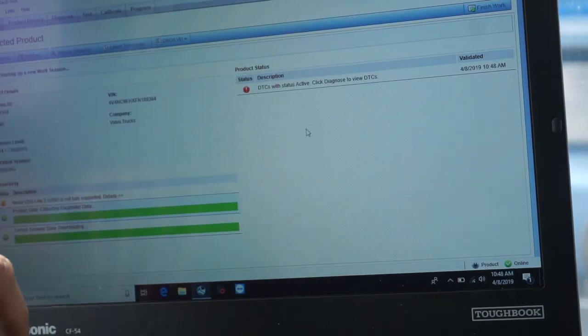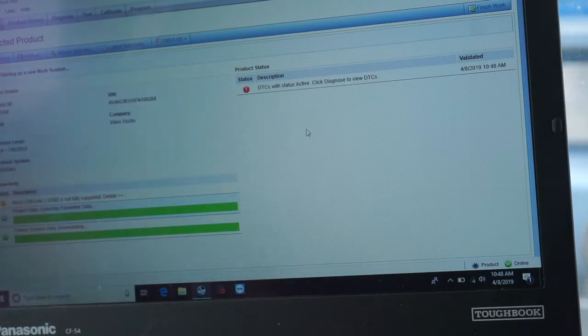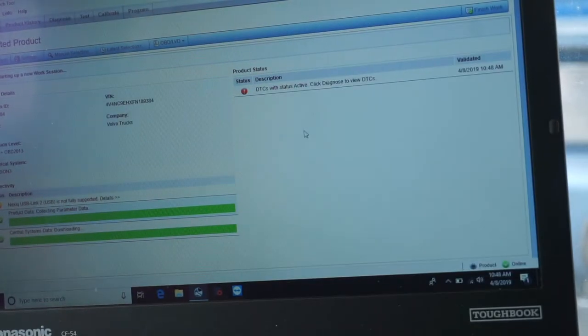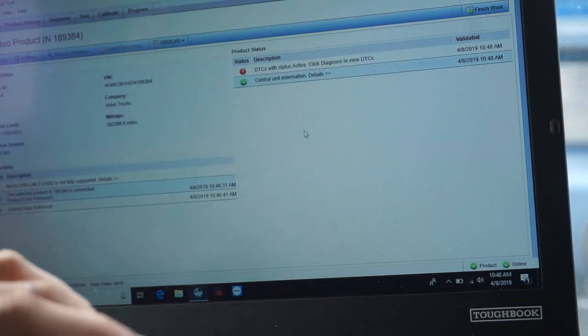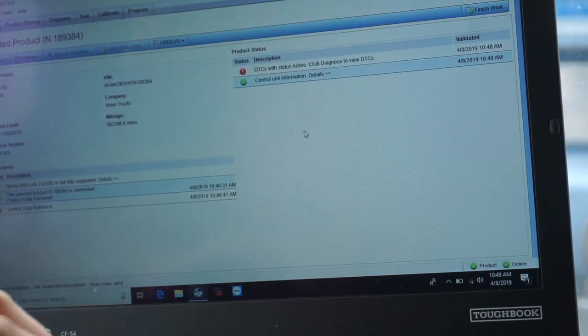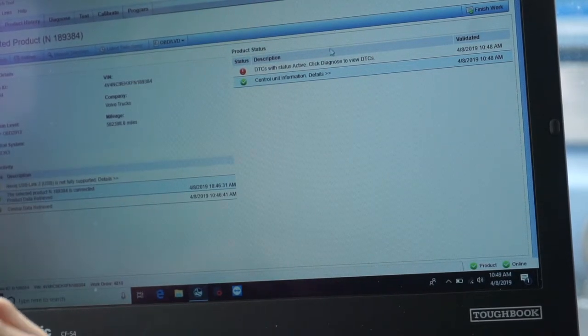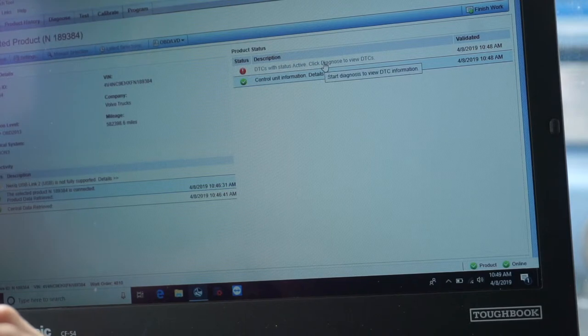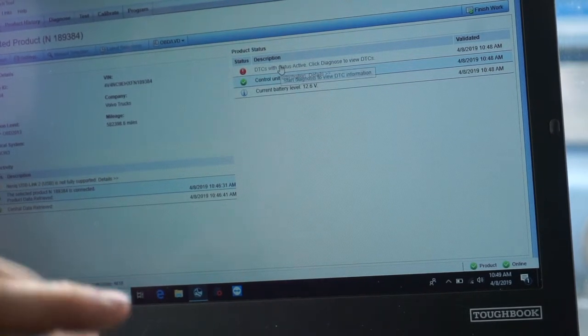Once all that goes through, this will highlight itself here. It does take just a minute sometimes, so you got to be patient with it. As you can see now, up here it says DTCs with status active, click diagnose to view DTCs. So I'm just going to click on that.